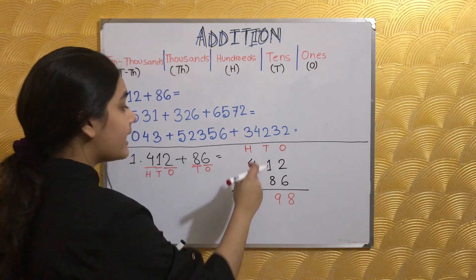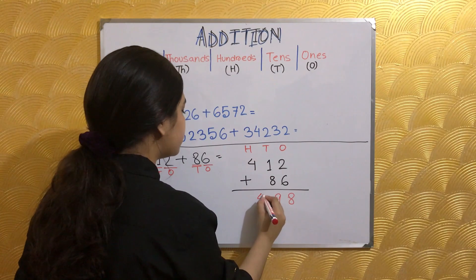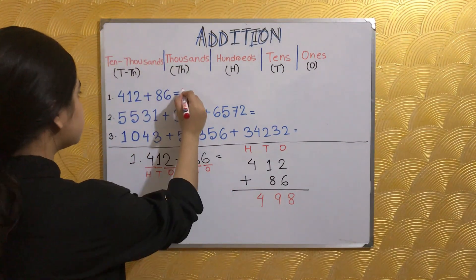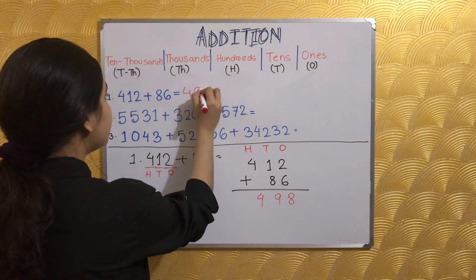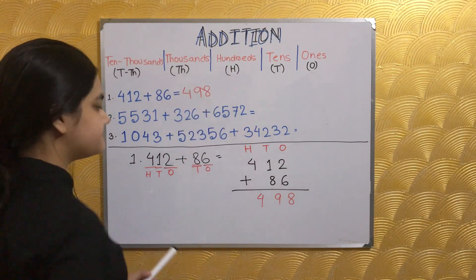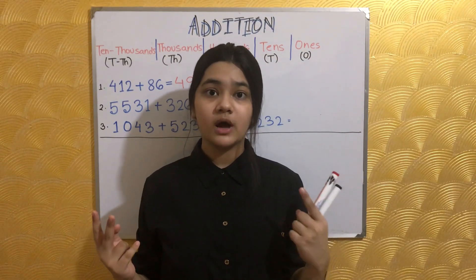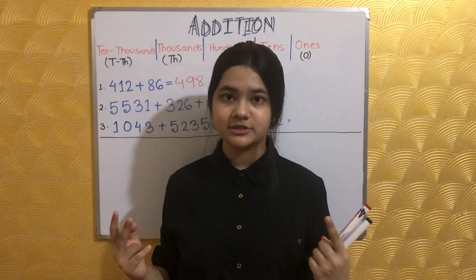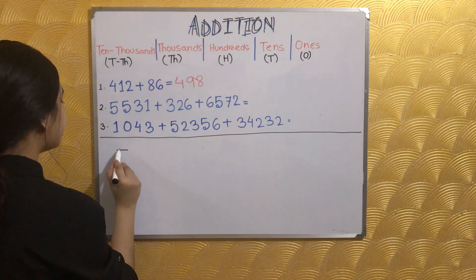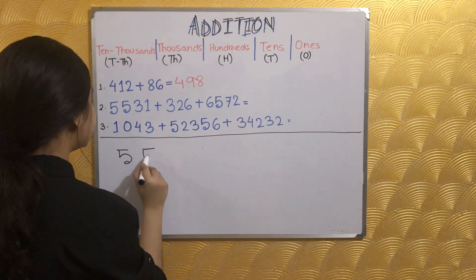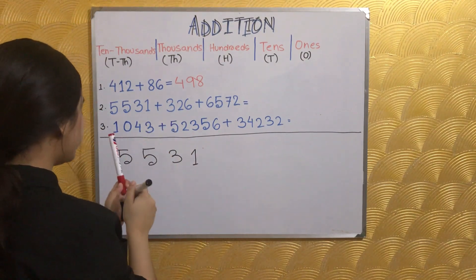There is nothing under 4 so 4 will remain as 4. So 412 plus 86 is 498. Now let's solve two four-digit numbers and one three-digit number together. Over here we have 5531 plus 326.